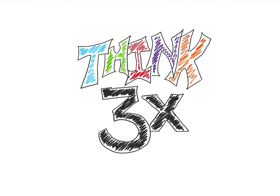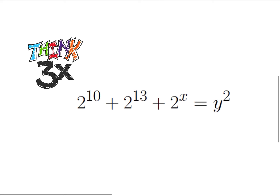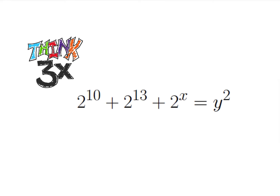Welcome back to Think Thrice Problem Solving. Today we're going to be solving a fun little number theory problem. We have 2 to the 10th plus 2 to the 13th plus 2 to the x is equal to y squared, where x and y are both integers. If you want to try it out, pause the video. Otherwise we're going to jump straight in.